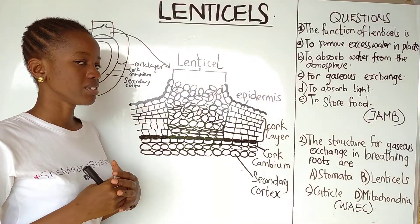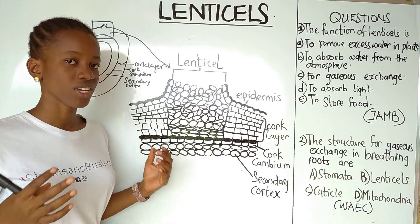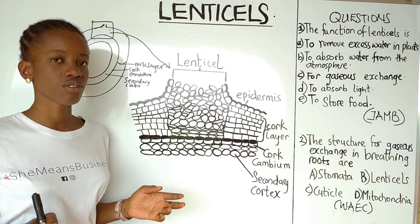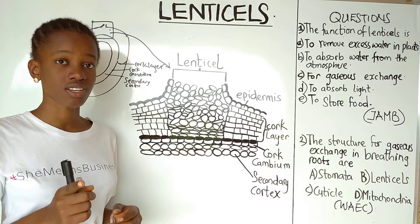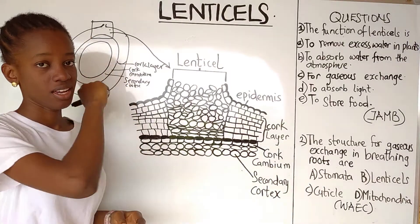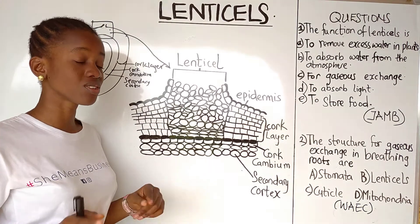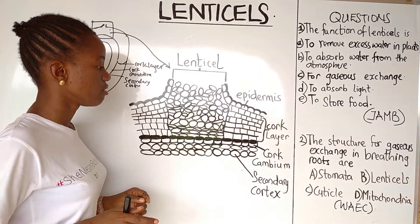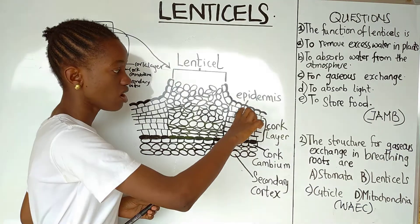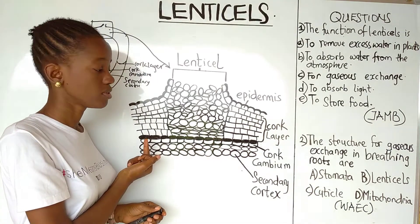Before we look at the gases exchanged in a lenticel, let me explain a little about how a lenticel is made. A lenticel is made during the secondary thickening of the plant — which is also the stage at which the bark is made.